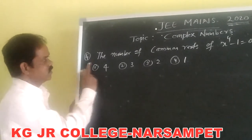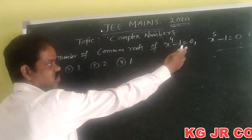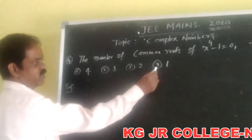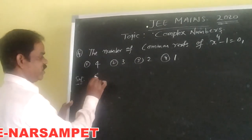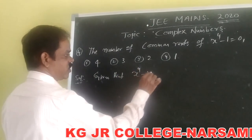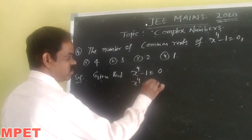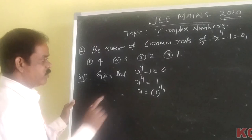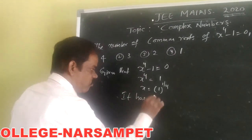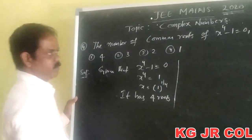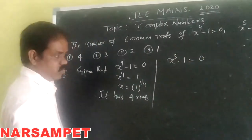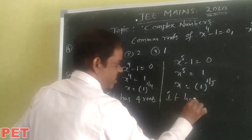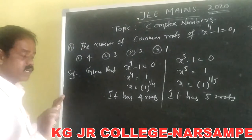Fourth problem: find the number of common roots of x to the power 4 minus 1 equals 0, and x to the power 5 minus 1 equals 0. Options: first is 4, second is 3, third is 2, fourth is 1. For x⁴ minus 1 equals 0, x⁴ equals 1, so x equals 1 to the power of 1/4 — it has 4 roots. For x⁵ minus 1 equals 0, x⁵ equals 1, x equals 1 to the power of 1/5 — it has 5 roots. We are asked for the common roots.